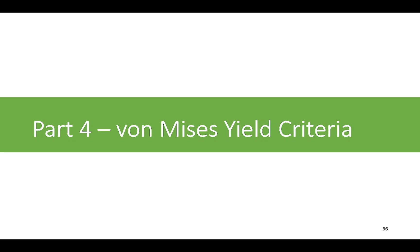Let's move to the next part where we will see how the Von Mises yield criteria really looks like. I will give you one of the definitions of elastic and plastic response in ductile materials used in Von Mises yield criteria. In the next part we will start working on implementing that theory. I will keep the derivations to a minimum and give more details on final outcomes and assumptions. If you are more interested in derivation, you can look at any basic solid mechanics or stress analysis book.